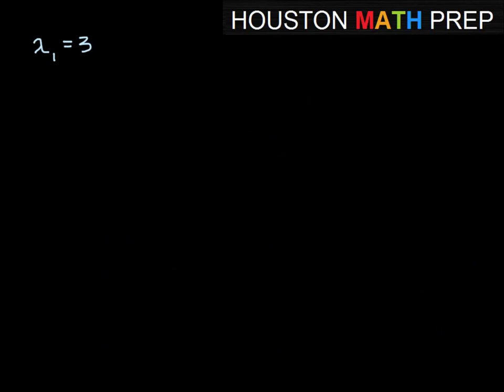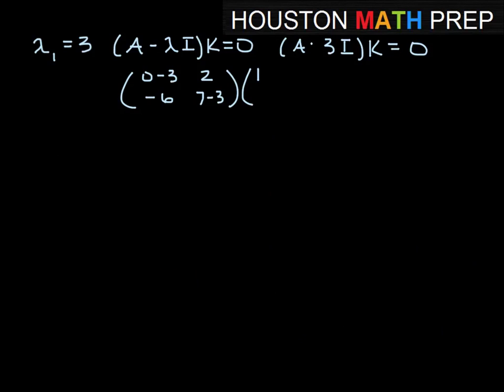Alright, so moving forward with this, if we look at the first eigenvalue of 3, remember we're taking A minus λI times K equal to 0 to solve this. So that will be A minus 3I times K equals 0. So A minus 3I is going to be 0 minus 3, 2, -6, and 7 minus 3 times K.